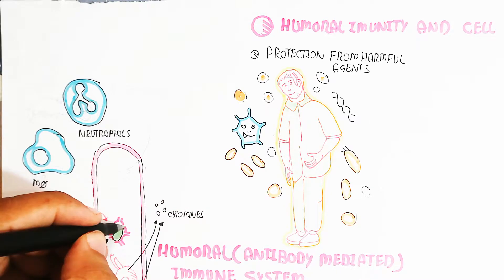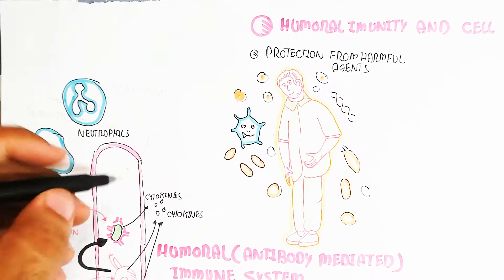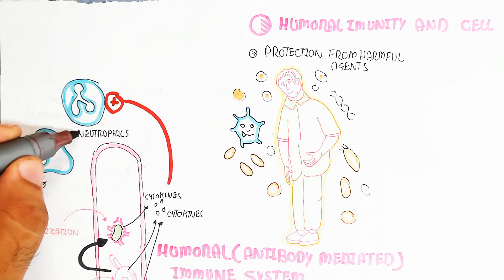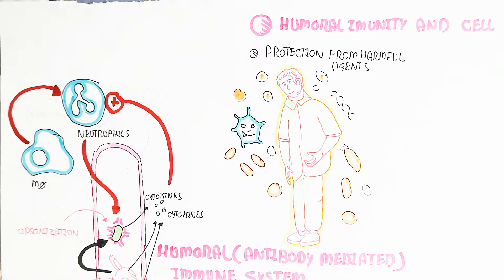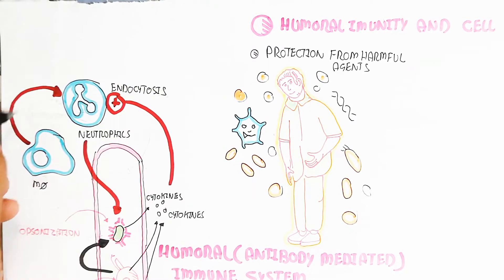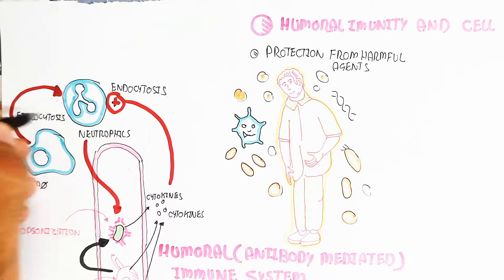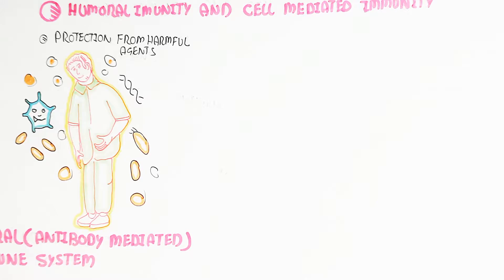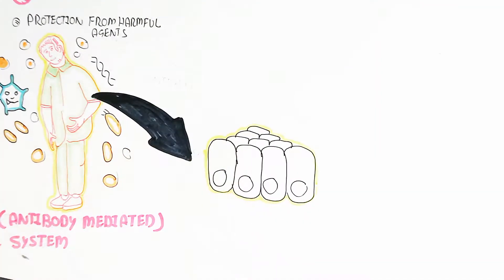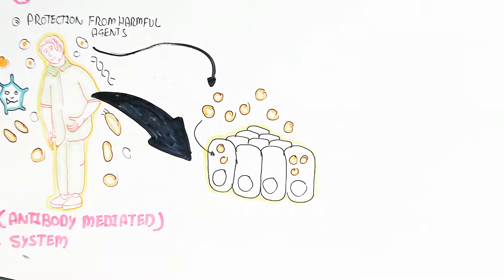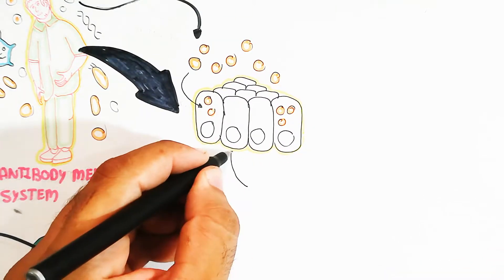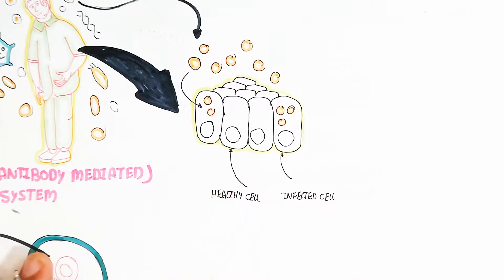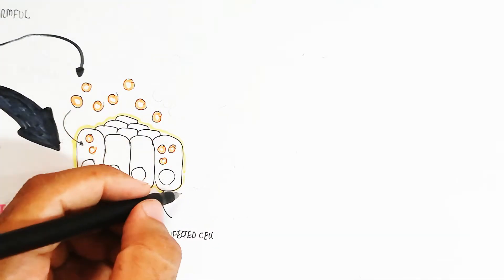The opsonized antigen is then damaged, producing cytokines that recruit neutrophils and macrophages. Macrophages, meaning 'big eaters,' perform phagocytosis along with neutrophils, leading to clearance of the antigen. In this way, pathogenicity is decreased by the immune system.